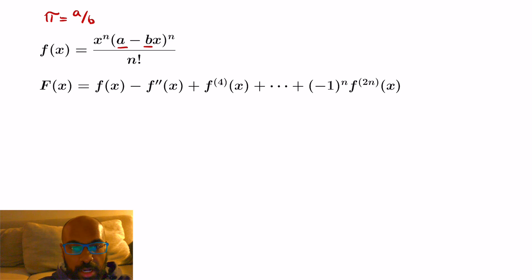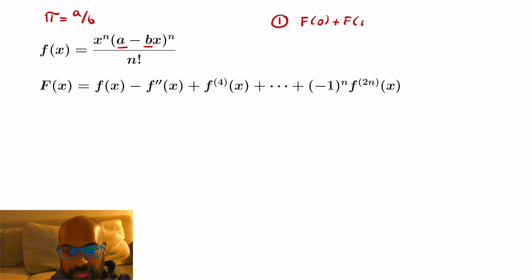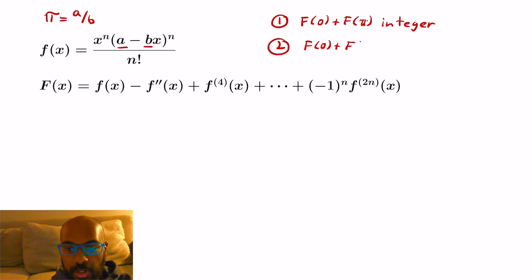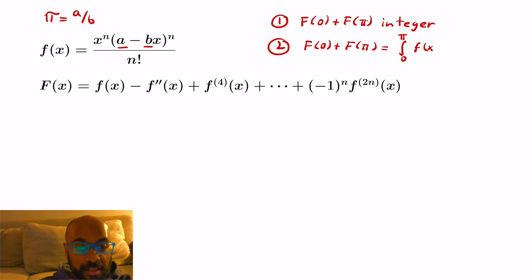The function f(x) is x to the n times the quantity (a minus bx) to the n, all over n factorial. We also involve a function capital F, which looks at different derivatives of little f and sums them up. We're going to prove two main claims that lead us to why pi is irrational. The first is that capital F of 0 plus capital F of pi is an integer. The second is that capital F of 0 plus capital F of pi equals the integral from 0 to pi of little f times sine of x dx.